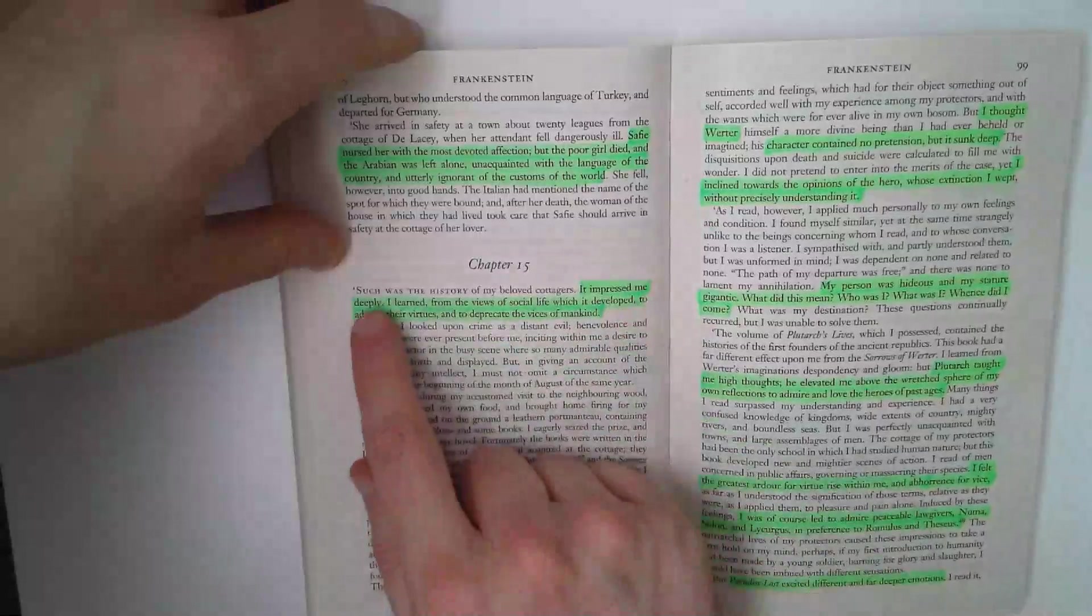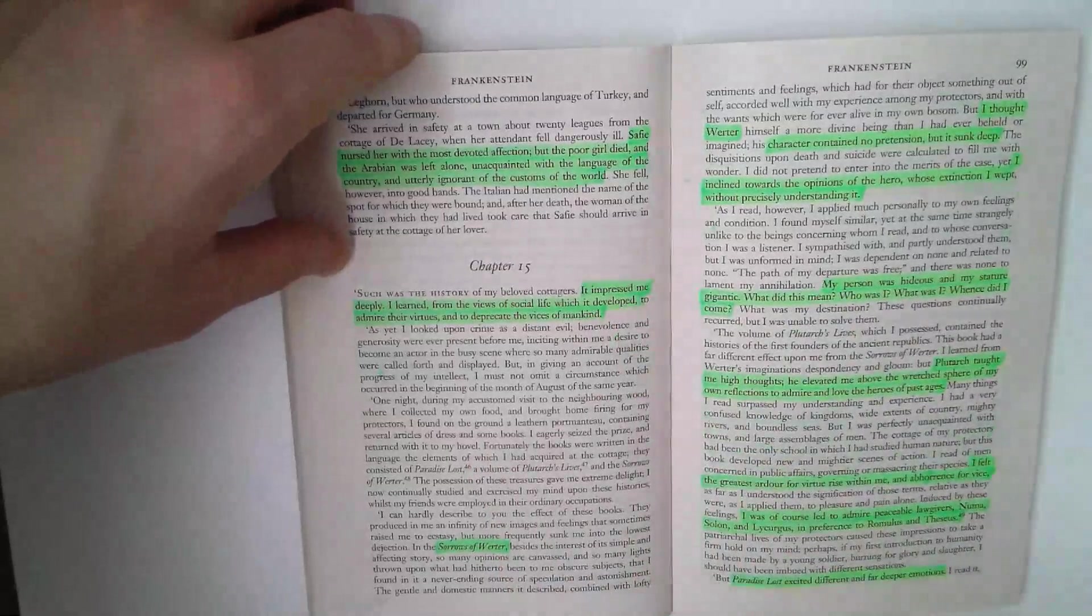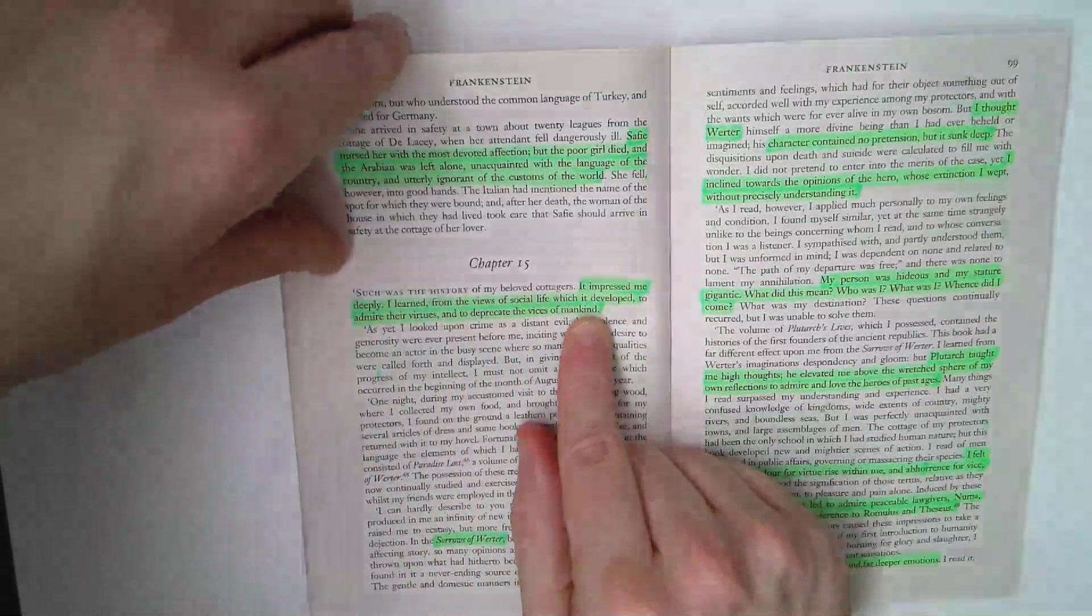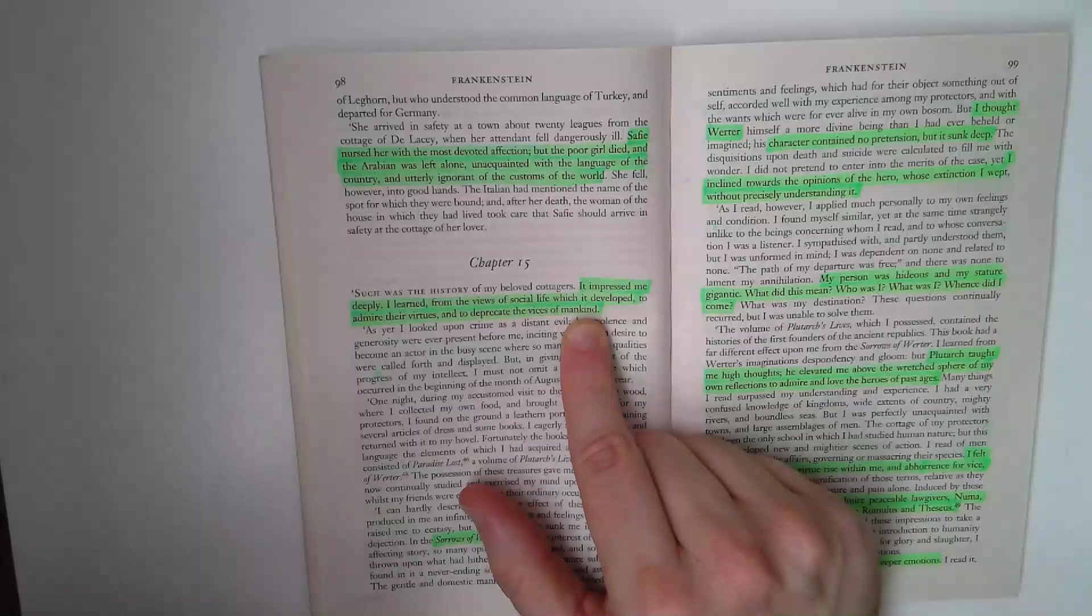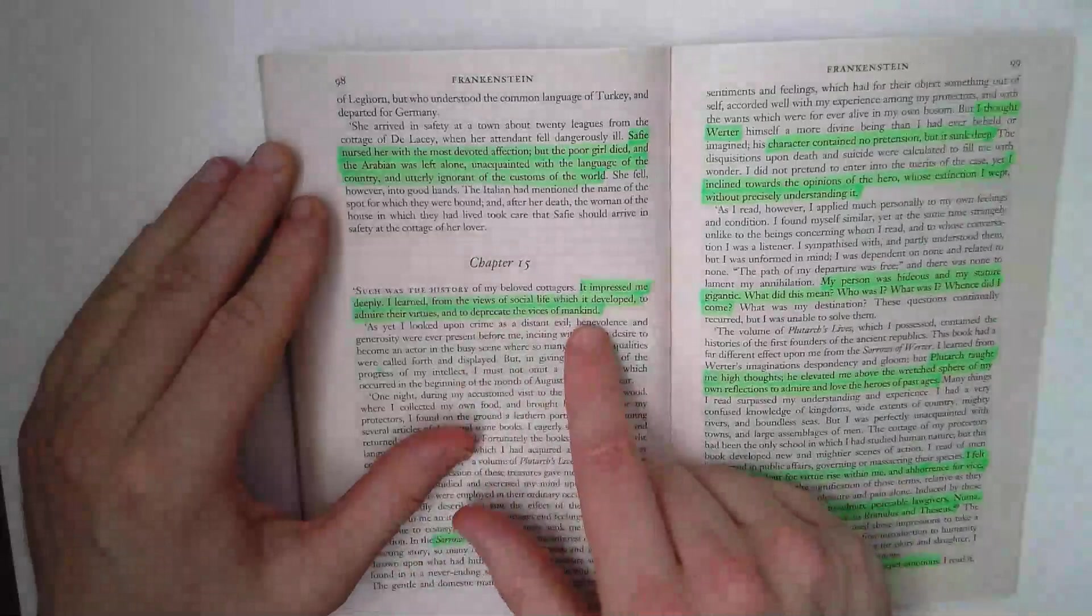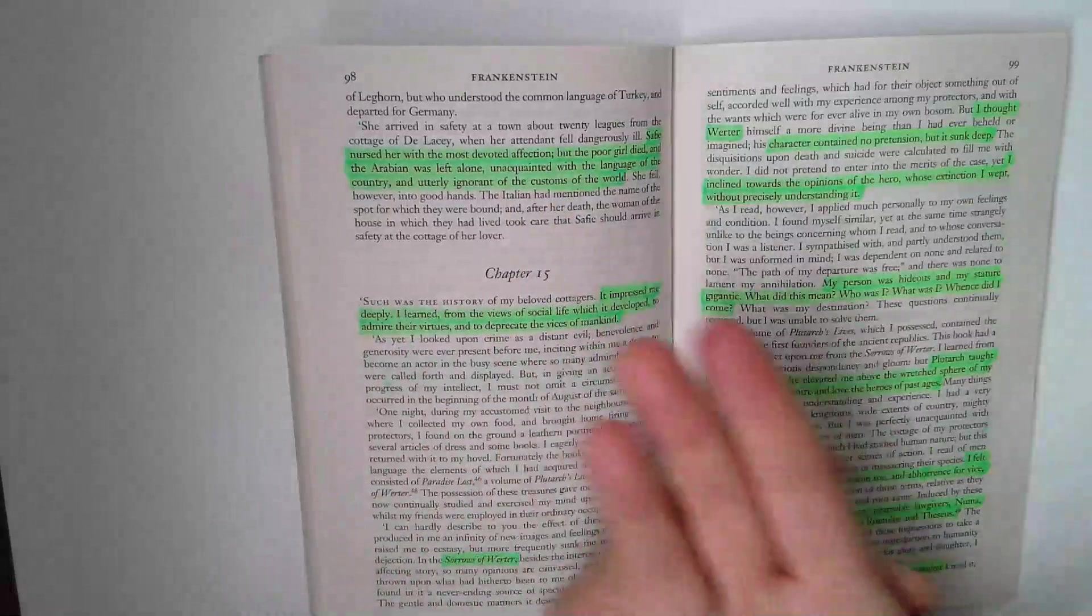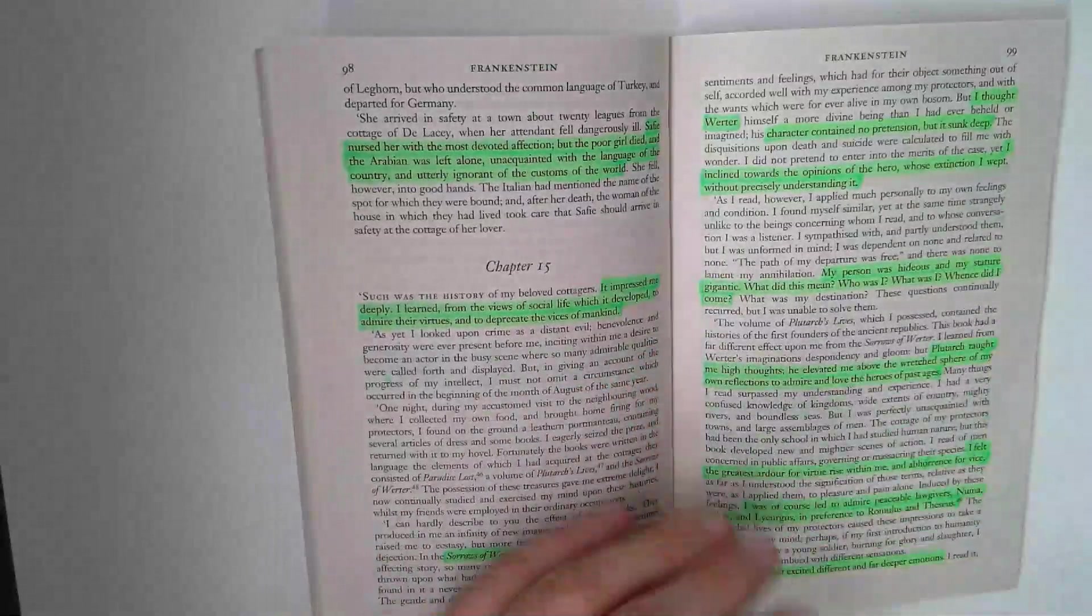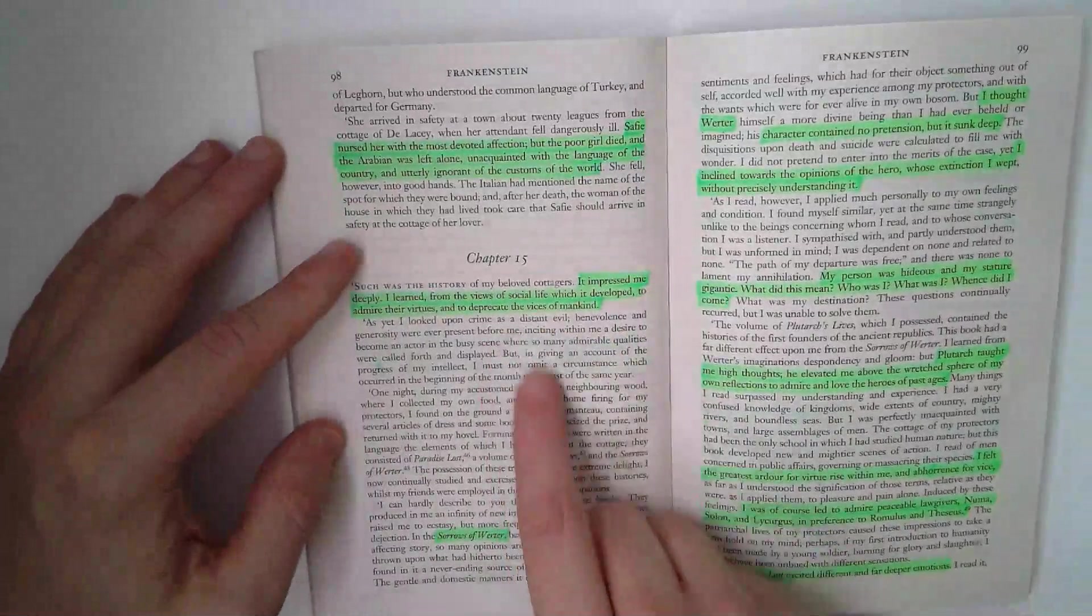Impressed me deeply. Not impressed as being like oh yeah, that's a great story, but in terms of the emotional impact it has on the creature. I learned to admire their virtues and to deprecate the vices of mankind. The father's behavior, a wicked father and the creature knows that all too well. He deprecates that idea and admires their virtues. Where we saw perhaps he was boasting about being able to learn English faster than Safi, which of course he should do given the constituent parts of his frame, this now marks a change in the creature.